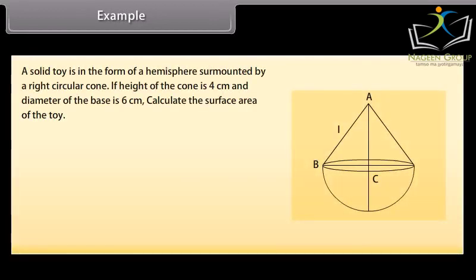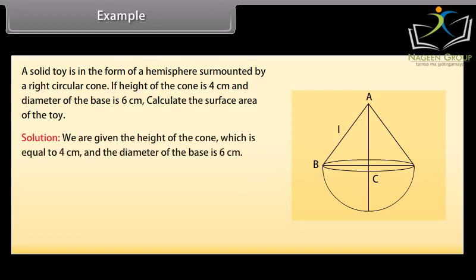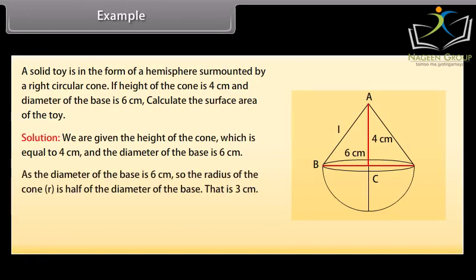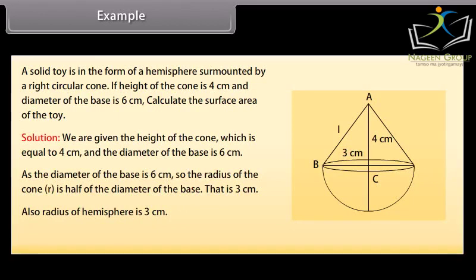A solid toy is in the form of a hemisphere surmounted by a right circular cone. If the height of the cone is 4 cm and the diameter of the base is 6 cm, calculate the surface area of the toy. We are given height H = 4 cm and diameter = 6 cm, so radius R = 3 cm. The radius of the hemisphere is also 3 cm. To find the surface area, we need the curved surface area of the cone and the curved surface area of the hemisphere.